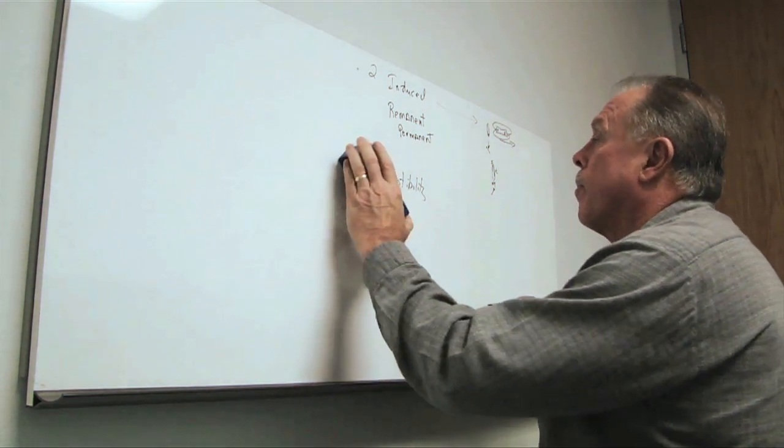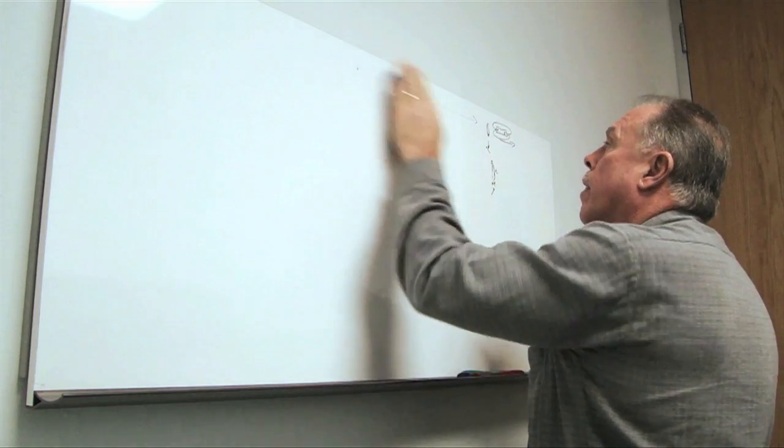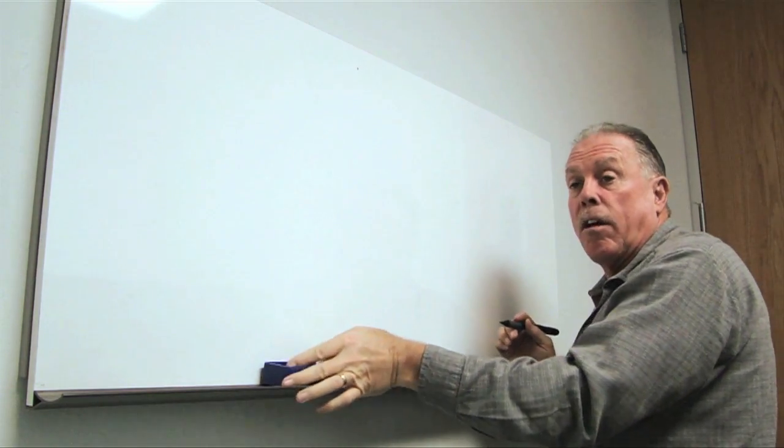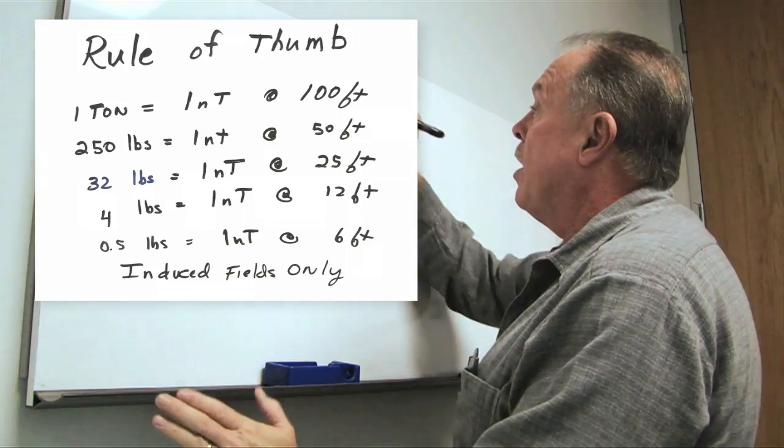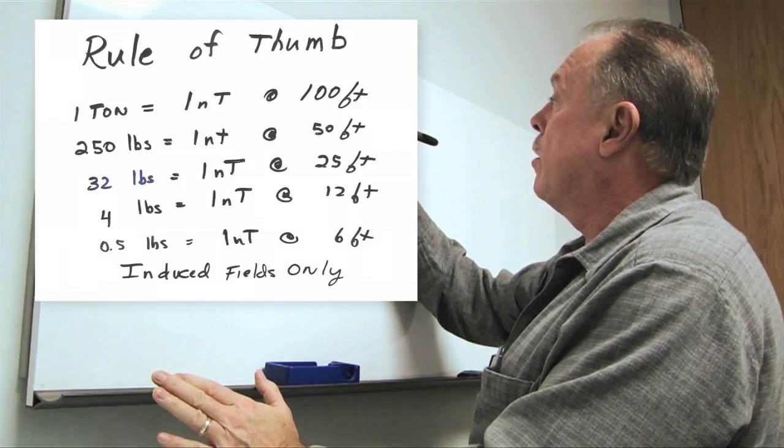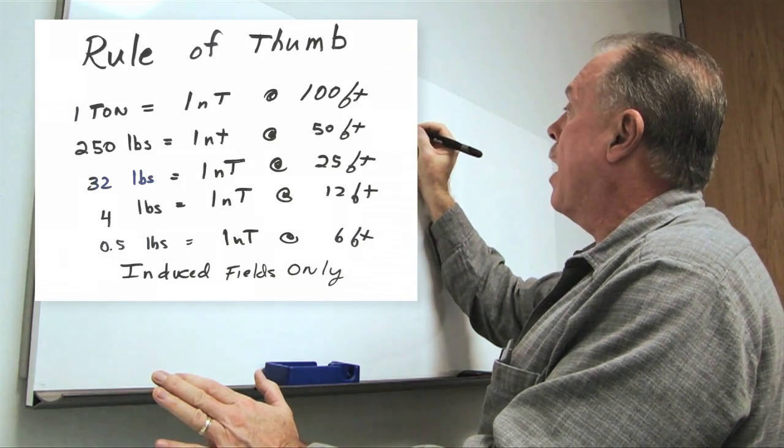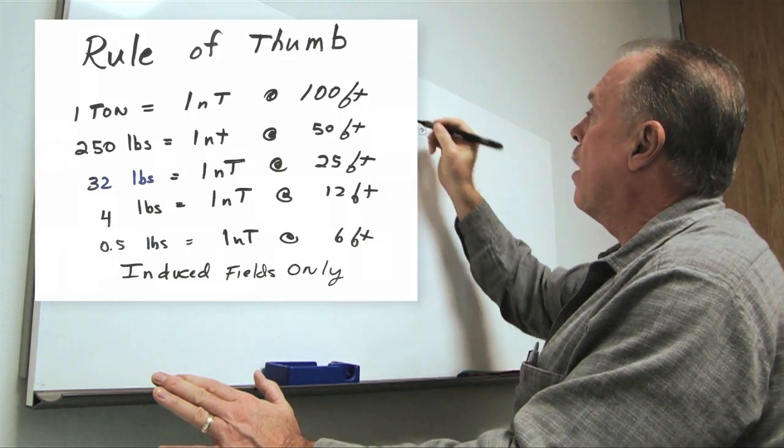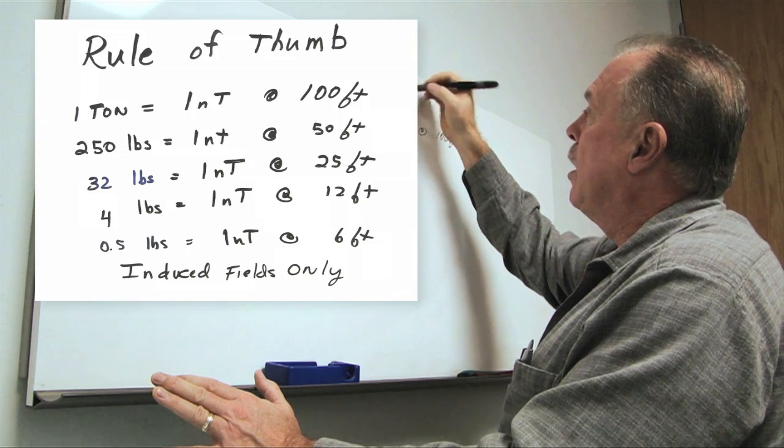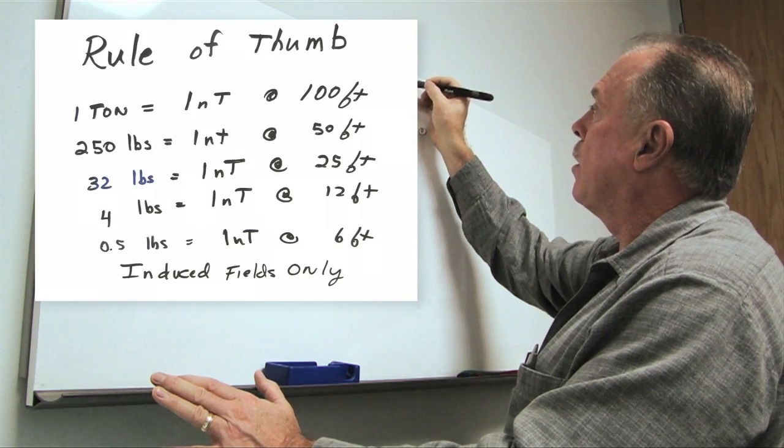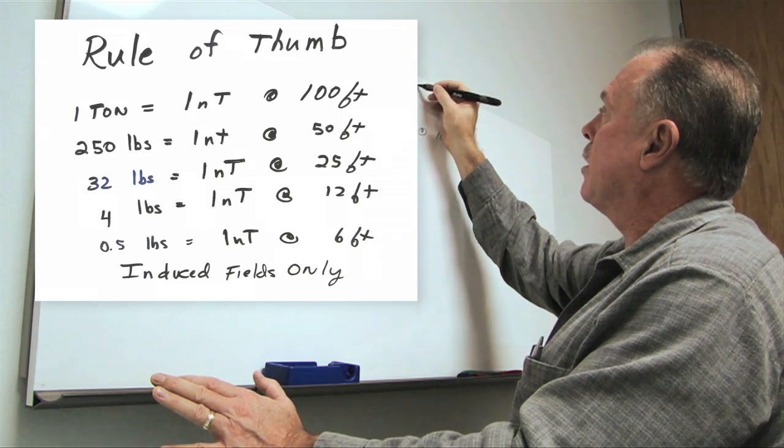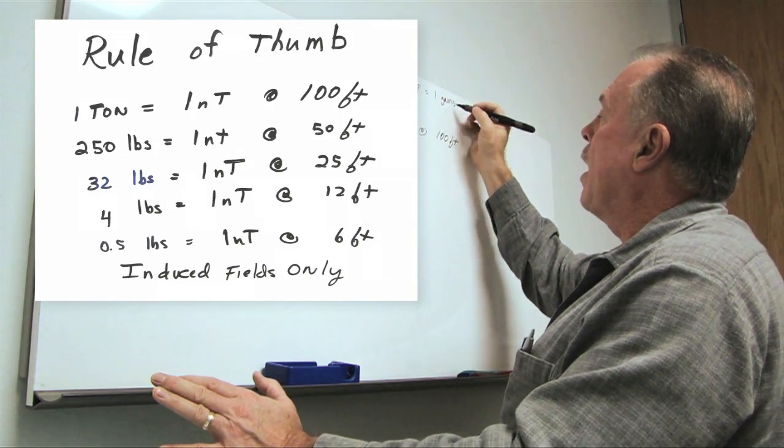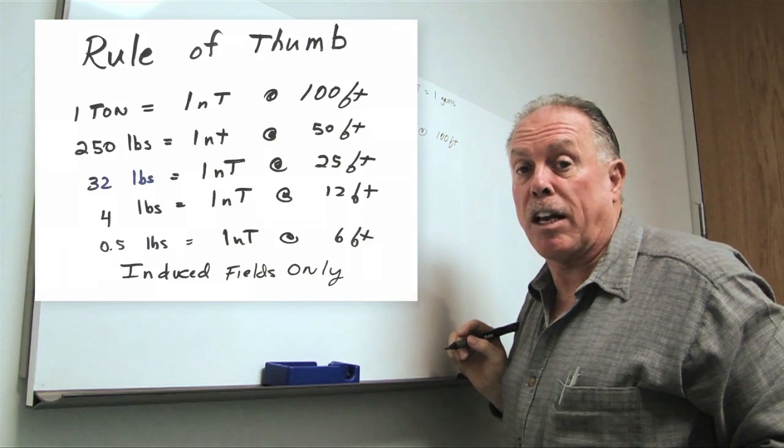So the rule of thumb that we use in determining the size of targets and therefore the distance to which we can see them is that one ton equals one nanotesla at 100 feet. Now one nanotesla, there are 100,000 nanoteslas equals one gauss. And one gauss is basically the strength of the Earth's magnetic field.